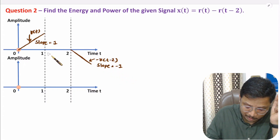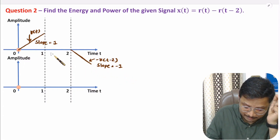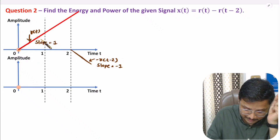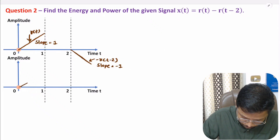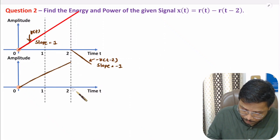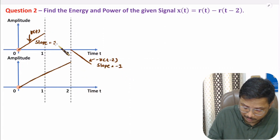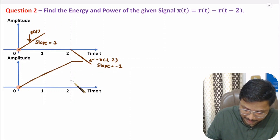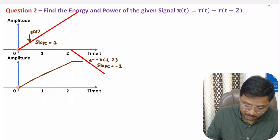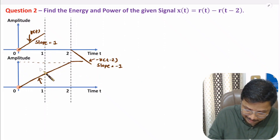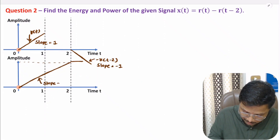Plotting the total signal as the algebraic addition of these two: between 0 and 2, only r(t) is present, so the signal rises with slope 1. After t = 2, the negative slope is added, so plus 1 and minus 1 result in 0 slope, giving a horizontal line. The amplitude at t = 2 seconds is 2, so after 2 seconds the signal remains at amplitude 2.